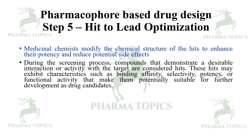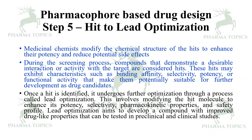During the screening process, compounds that demonstrate desirable interaction or activity with the target are considered as hits. These hits may exhibit characteristics such as binding affinity, selectivity, potency, or functional activity that make them potentially suitable for further development as drug candidates. Once a hit is identified, it undergoes further optimization through lead optimization — modifying the hit molecule to enhance its potency, selectivity, pharmacokinetic properties, and safety profile — to develop a compound with improved drug-like properties for pre-clinical and clinical studies.